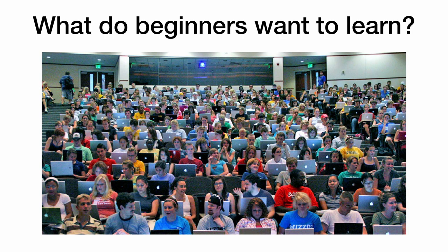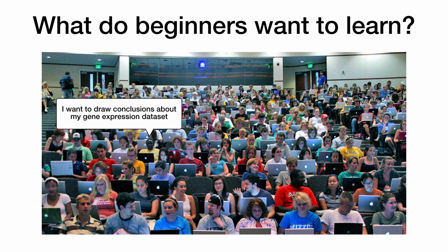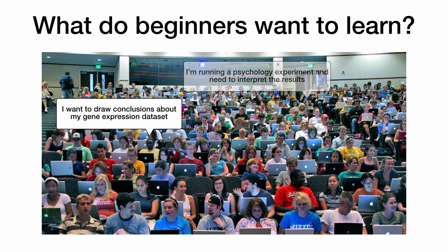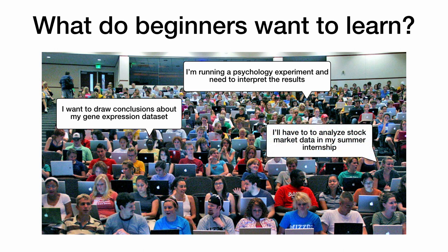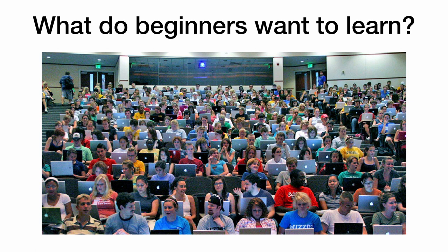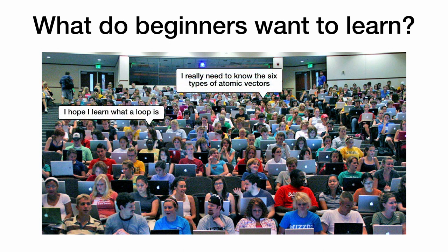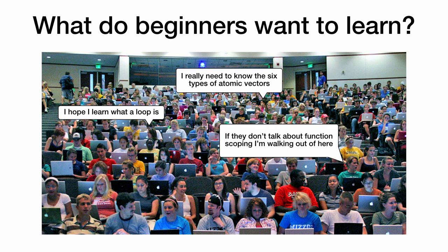So when a beginner walks into a class, what might they want to learn? So typically someone might be in the crowd and say, well, I want to draw conclusions about my gene expression data set. Or maybe they have a psychology experiment they need to interpret the results. Maybe they have an internship coming up. They'd like to analyze data for their job. So these are the kinds of goals that students are going to walk in and they're ready to put in the work to learn these things. What aren't they thinking? They're probably not thinking, well, I really want to hear what a loop is. They're probably not thinking, I need to know the six types of atomic vectors. No one's going in and saying, if they don't talk about function scoping, I'm going to lose my mind.